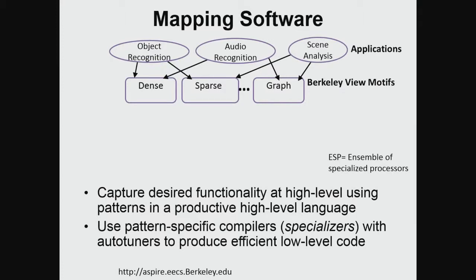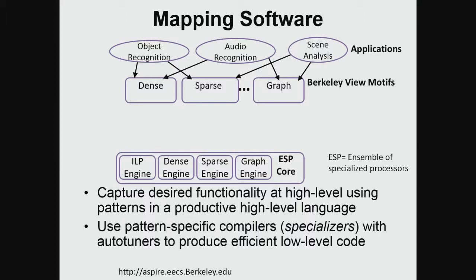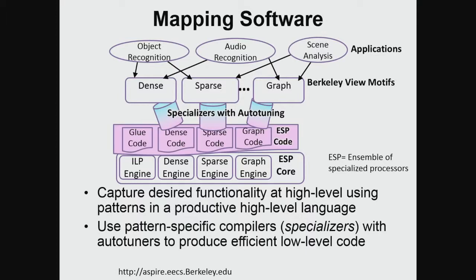The idea is to take the applications we have, find their motifs, and then build an ensemble of specialized processors on the bottom that can run certain code very efficiently — for example, an instruction level parallelism engine, a dense engine, a sparse engine, a graph engine — set for a particular set of applications. Then we have software that recognizes when C code is trying to multiply a matrix and maps it optimally onto that specializer.